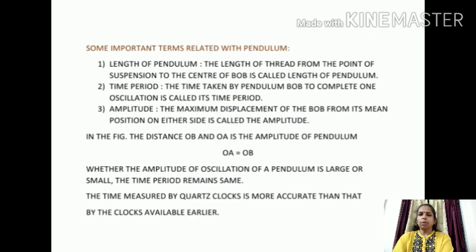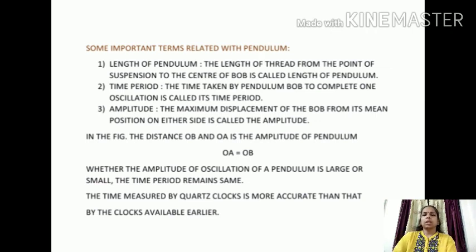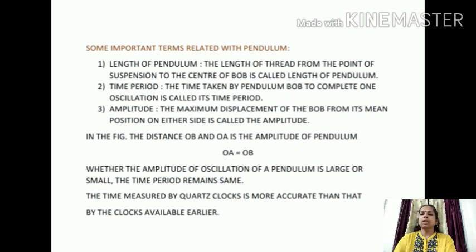Now we will discuss some important terms related to the pendulum. The first is the length of the pendulum. The length of the thread from the point of suspension to the center of the bob is called the length of the pendulum, where the point of suspension is the point from where the pendulum is suspended. The time period of a pendulum depends on its length — if the length is increased, the time period will increase, and if the length is decreased, the time period will decrease.